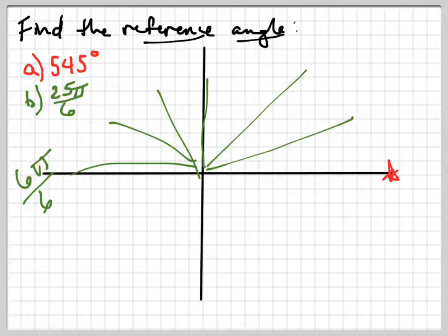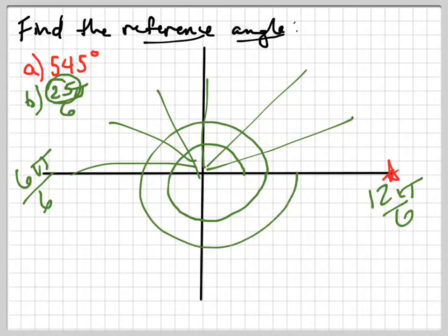This over here would be 12π over 6. And keep going. If I go around once, it's 12π over 6 because that's equal to 2π. And if I go around again, it's 24π over 6. So you just go one more over, one more π over 6 right here.